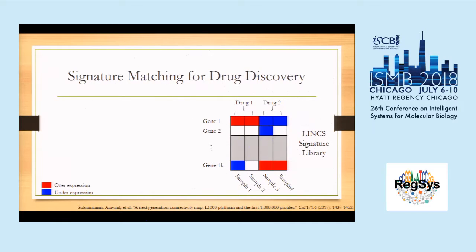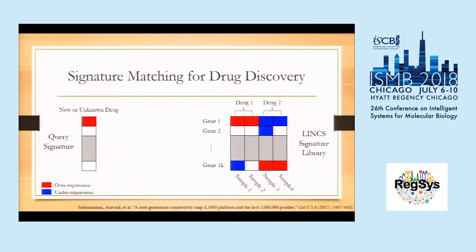Matching gene signatures to signature libraries is a very critical step for drug discovery. Suppose we have a mini signature library shown on the right. In the mini library, we have four samples — two done with drug one and another two with drug two. Being red means a gene is overexpressed under treatment, while being blue means a gene is underexpressed. Suppose we are given a query signature and want to ask what drug inside the library can induce or reverse the query signature. That is a very typical question when trying to develop new drugs.